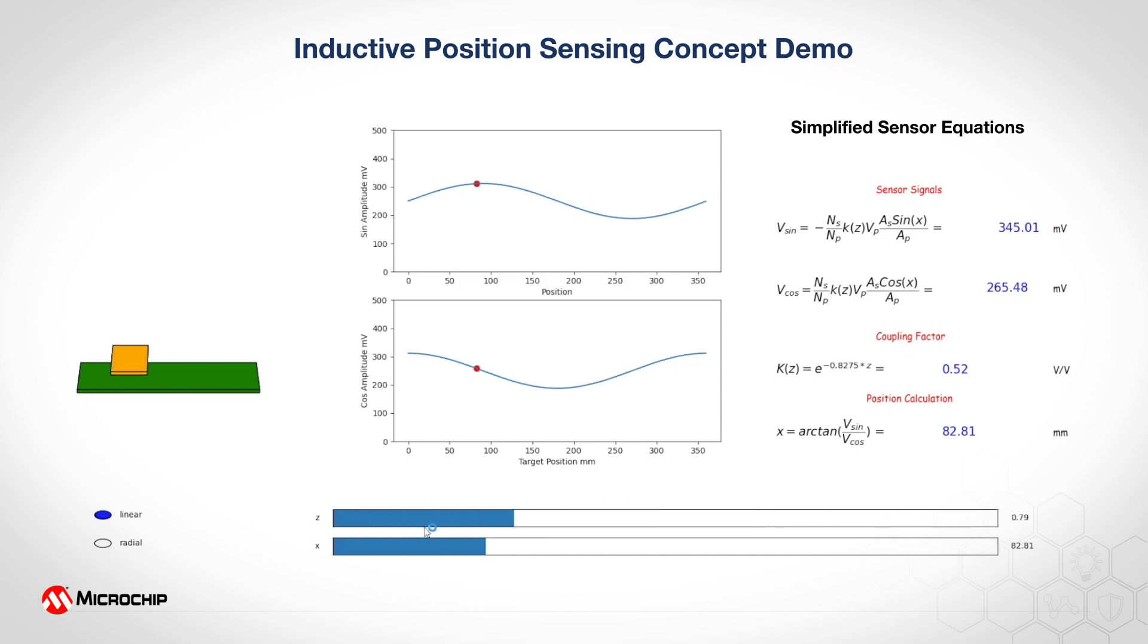So these are the common mode signals essentially. So our design gives us the immunity to coupling factor, the air gap factor, when we are calculating the final position.